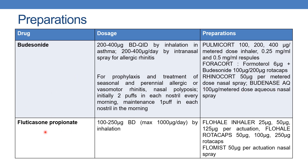The next drug is fluticasone propionate. The dose is 100 to 200 mcg twice daily, maximum of 1000 mcg per day by inhalation. The preparations are Flovent inhaler 25, 50, and 125 mcg per actuation, and Flovent rotacaps available as 50, 100, and 250 mcg rotacaps. Next is Flomist, available as 50 mcg per actuation nasal spray.